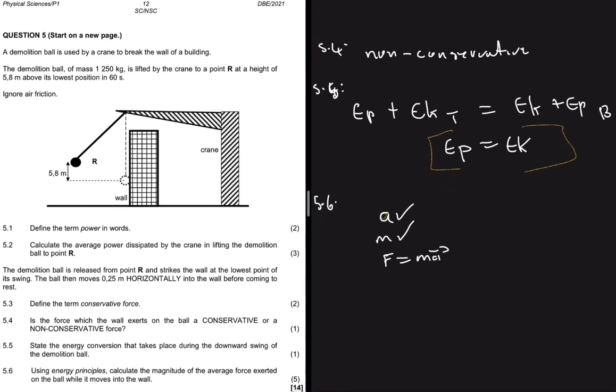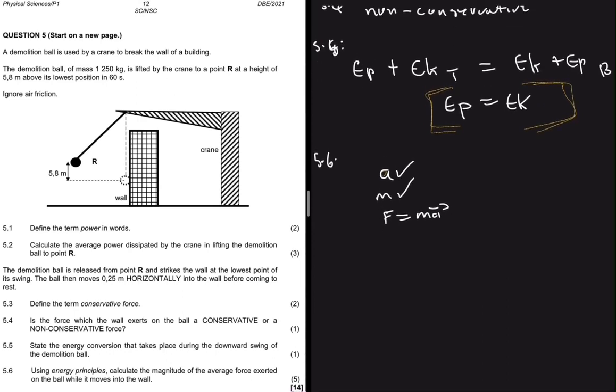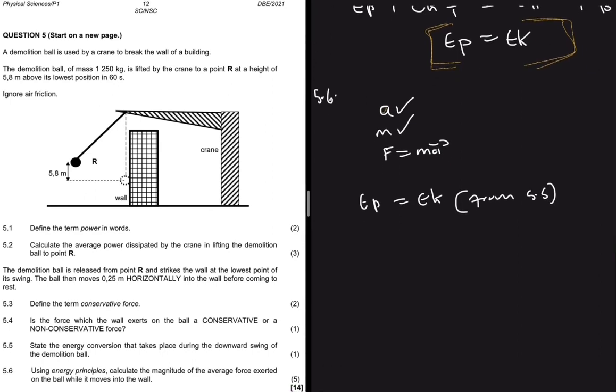But then to find the acceleration we first need to use this formula here to find v_2. So let's go ahead and do that. We have E_p equals to E_k from 5.5. So E_p is mass multiplied by gravity multiplied by height, which is equals to one over two mv_2 squared.